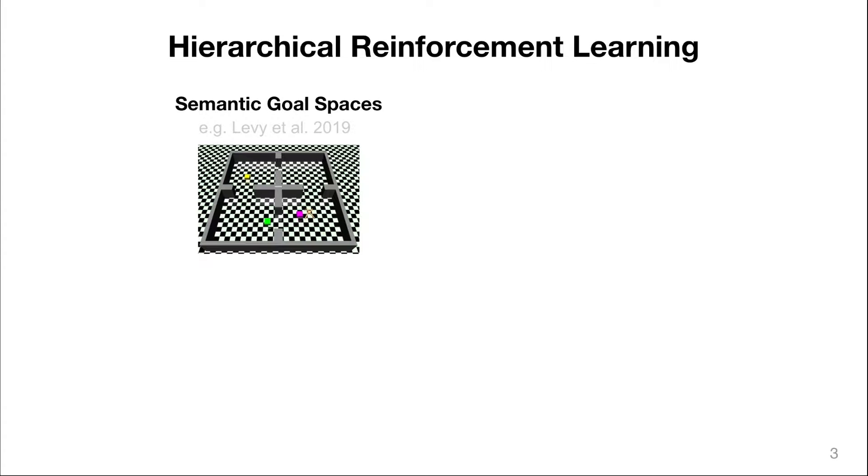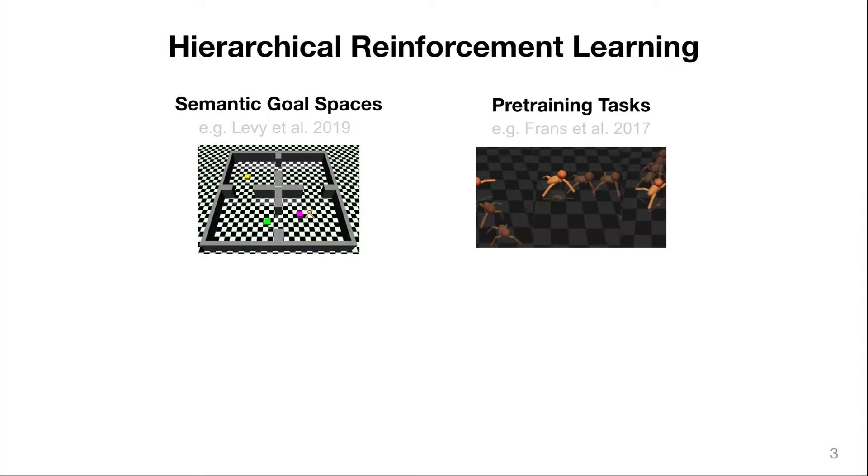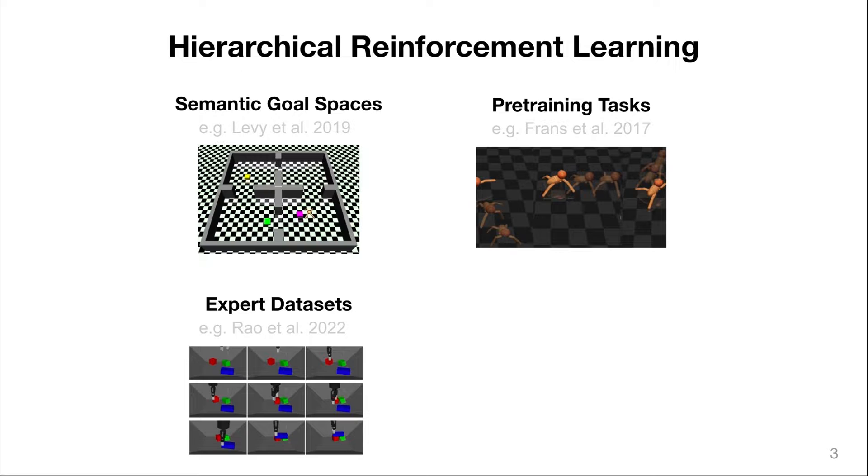For example, semantic goal spaces such as in the navigation task, the top-down position of the agent, the set of pre-training tasks that are specifically designed to teach the agent skills that are then helpful for the downstream task that is more complex. Or assuming the availability of expert datasets of all the good behaviors that are needed to solve the task that then can be broken down and clustered into reusable behaviors.